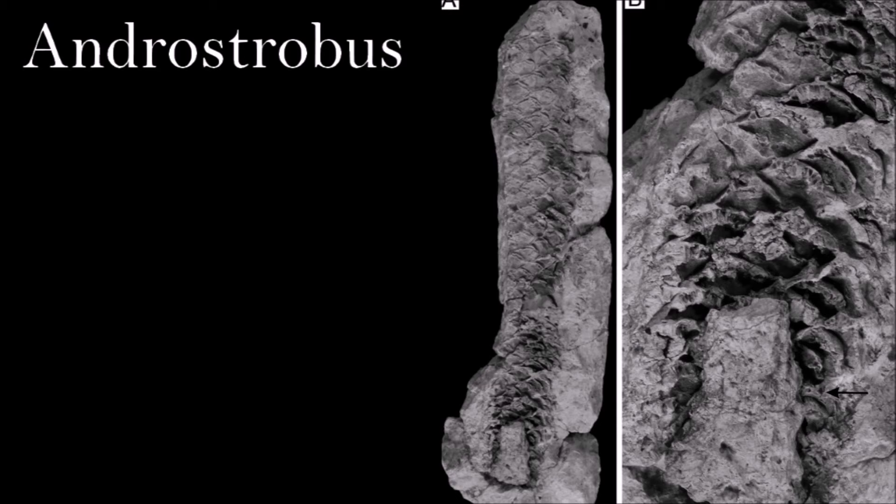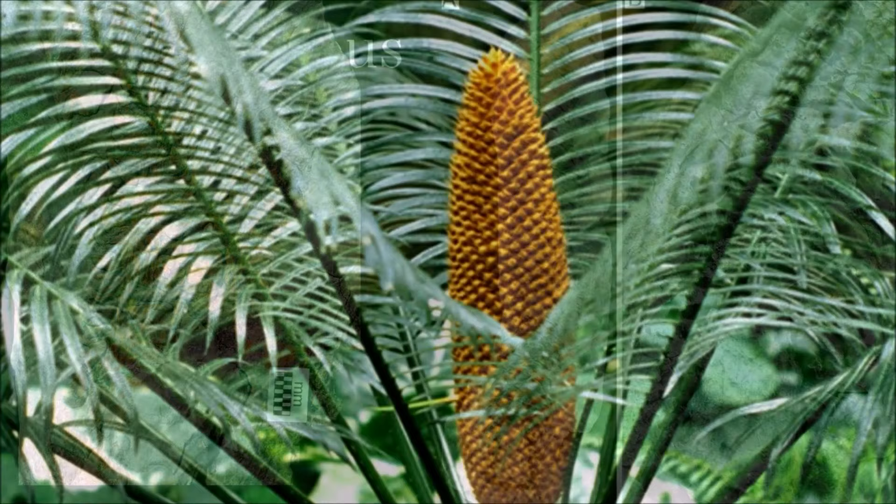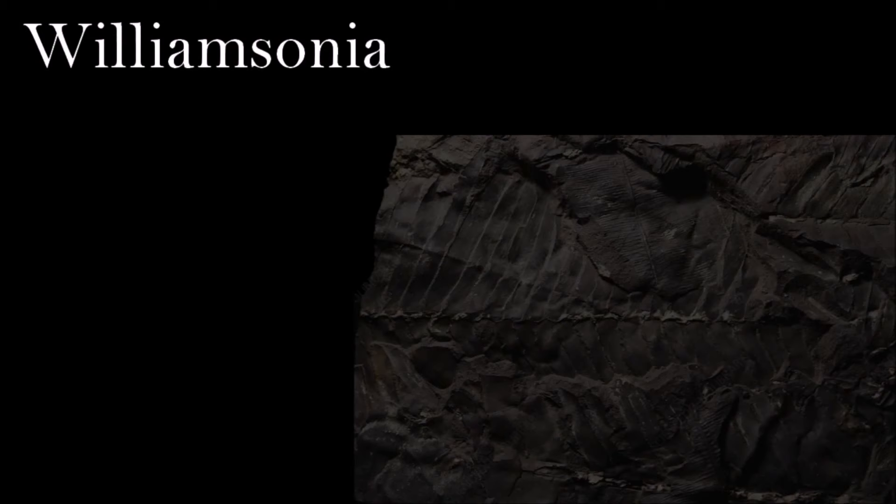Androstrobus is the name given to pollen-producing cones that are found together with cycad leaves such as Pseudopterus, and are thought to be part of the same plant. Their spirally arranged structure is thought to be made by modified leaves, each of which has an upturned scale at the end. The scales overlap each other to provide protection for the numerous pollen sacs on the underside of the sporophylls.